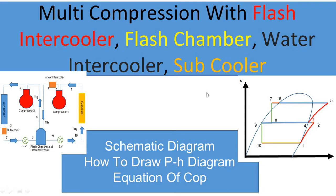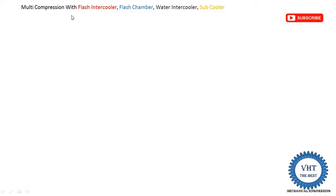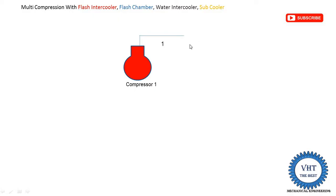This system is multi-compression with flash intercooler, flash chamber, water intercooler, and subcooler. Multi-compression means it has two compressors, one flash intercooler, flash chamber, water intercooler and subcooler, then one condenser and only one evaporator. We start from the low pressure compressor, that is compressor one. The vapor refrigerant at low pressure coming out from the evaporator is supplied into this compressor at point number one, and the outlet point is point number two. So one to two is an isentropic compression process — isentropic means constant entropy.